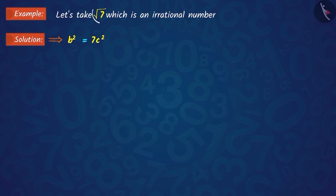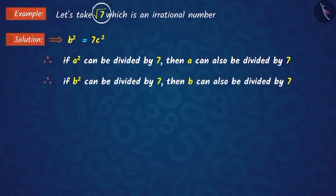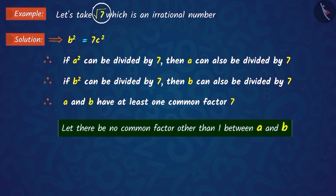According to the given irrational number square root of 7, we get two results here. Thus, we know that A and B have at least one common factor and that the common factor is 7. Note that we had assumed that A and B do not have any common factors other than 1, whereas the opposite or contradiction of this is obtained.